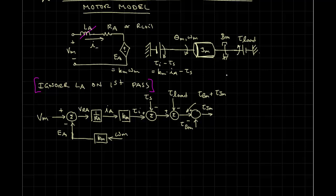And now, if we recall that omegam is equal to 1 over Sjm times tau Jm, what is this? I guess I could write this in the time domain, but what am I writing? I'm writing that omegam of T is equal to 1 over Jm times the integral of tau Jm.